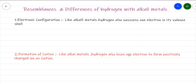Let us discuss what are the resemblances and differences between hydrogen and alkali metals. In this video we are going to discuss the points of similarities and the points of differences between hydrogen and alkali metals — that means why hydrogen can be placed along with the first group.